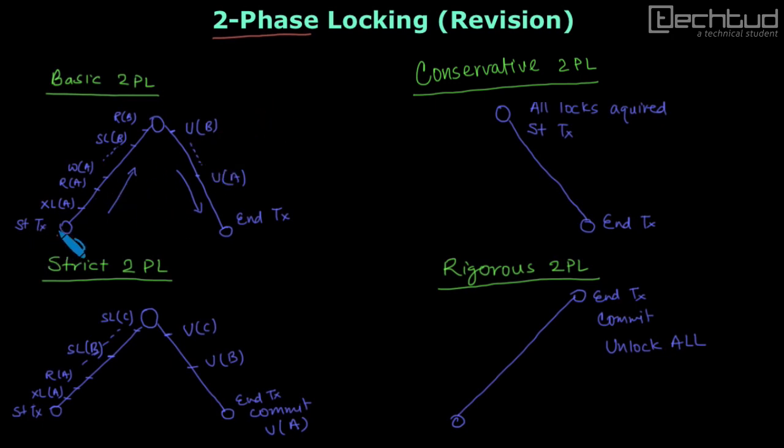When transaction starts, then transaction starts getting locks and meanwhile it can execute operations in between. When this is the shared lock, I am writing SL with shared lock. This is lock point. This is where this transaction gets final lock.